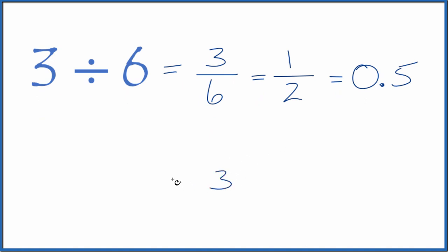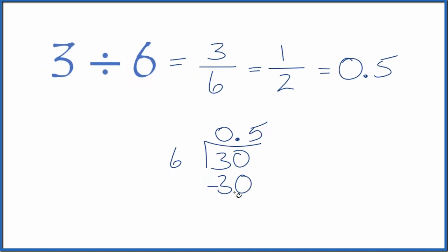The other way to do it is to do this longhand. Take 3 and see how many times 6 goes into 3. 6 doesn't go into 3, so we're going to call this 30 and then put a 0 with a point up here. 5 times 6 is 30, so we subtract, we get 0, and we end up with 3 divided by 6 as 0.5.